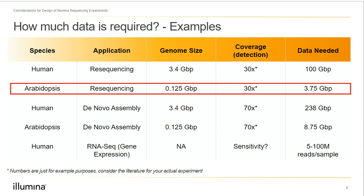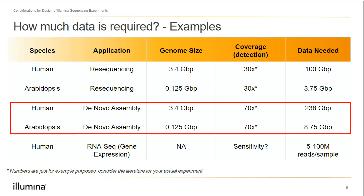Now let's consider a different application using the same two species. For a de novo assembly, we'll want to increase coverage to somewhere around 70x. By doing so, we'll need more data than we did for a resequencing experiment. There's a big gap between the two species, but what we want to note is the increase of data needed just by changing the application.